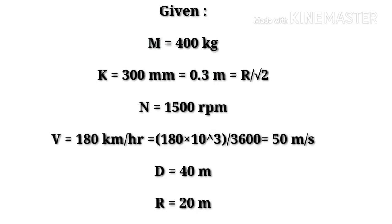They also give the flying velocity of the aeroplane as 180 km/h. We need it in metres per second, so we convert: 180 × 10³ divided by 3600, which gives 50 m/s.